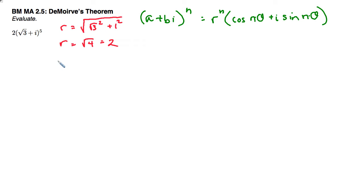And then our theta we can find by using the fact that the tangent of theta is going to equal b over a, which in this case is 1 over square root of 3. So I inverse tangent of 1 over square root of 3, and I get 30 degrees. You also may recognize 1 and square root of 3 as ratios for a special triangle.